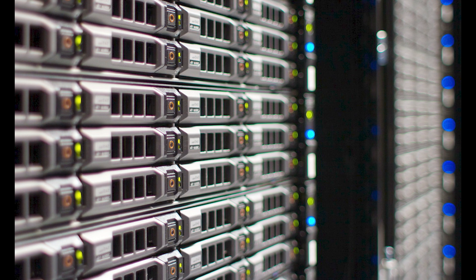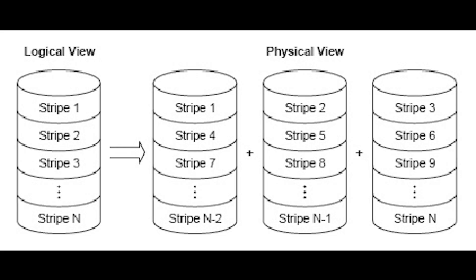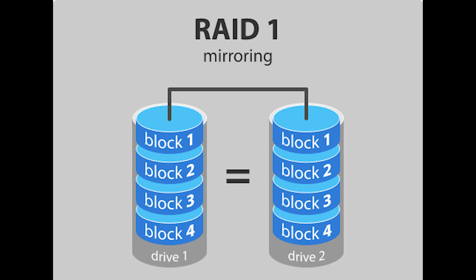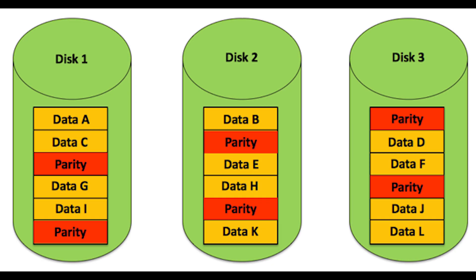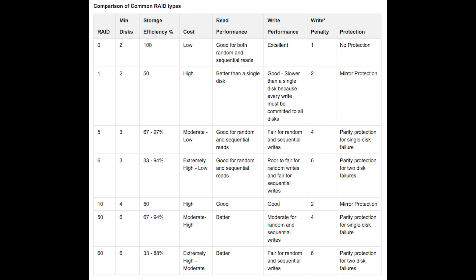Here's some terminology used in relation to RAID. First, striping, where data is spread over several drives. Then mirroring, where data is replicated across several disks. We also have parity, known as checksum — a determined value used to recreate data mathematically. There are various RAID levels offered to fulfill the requirements of different applications.